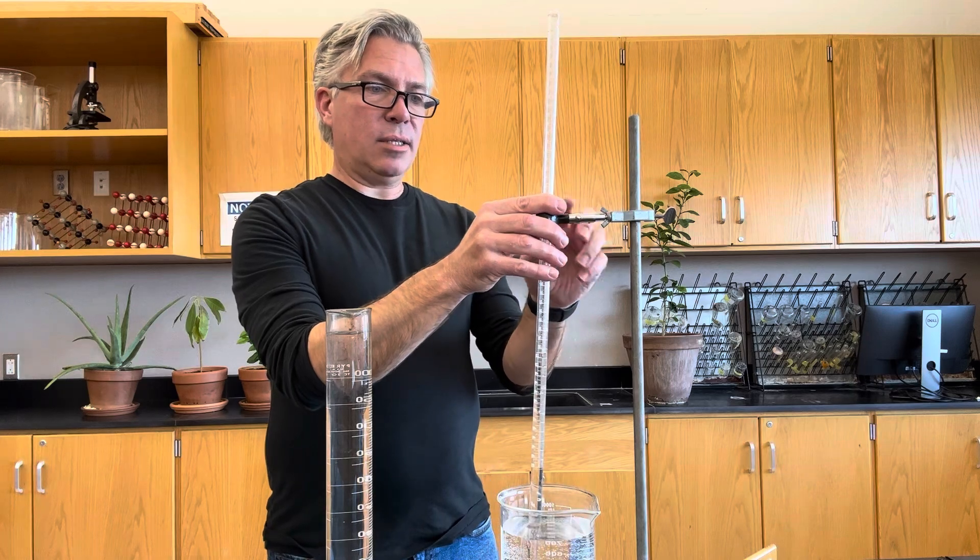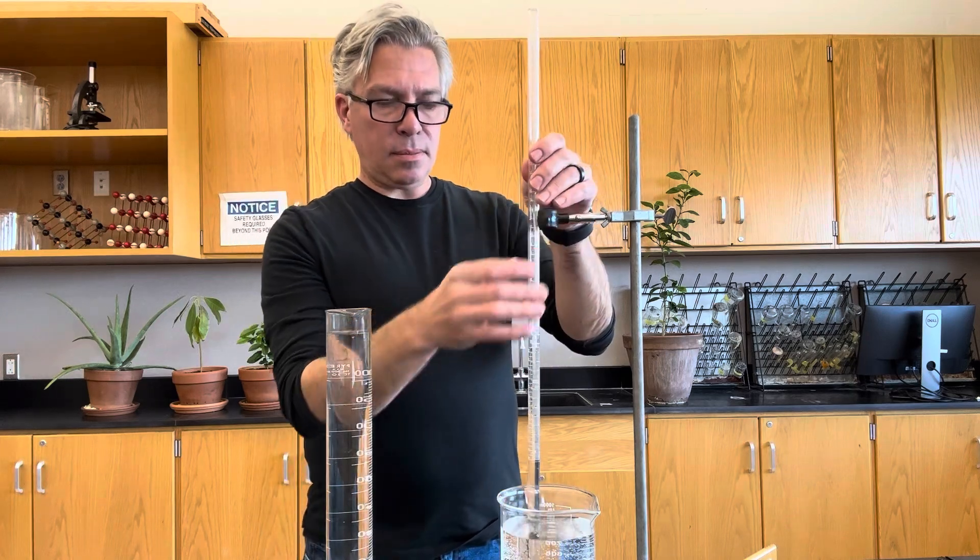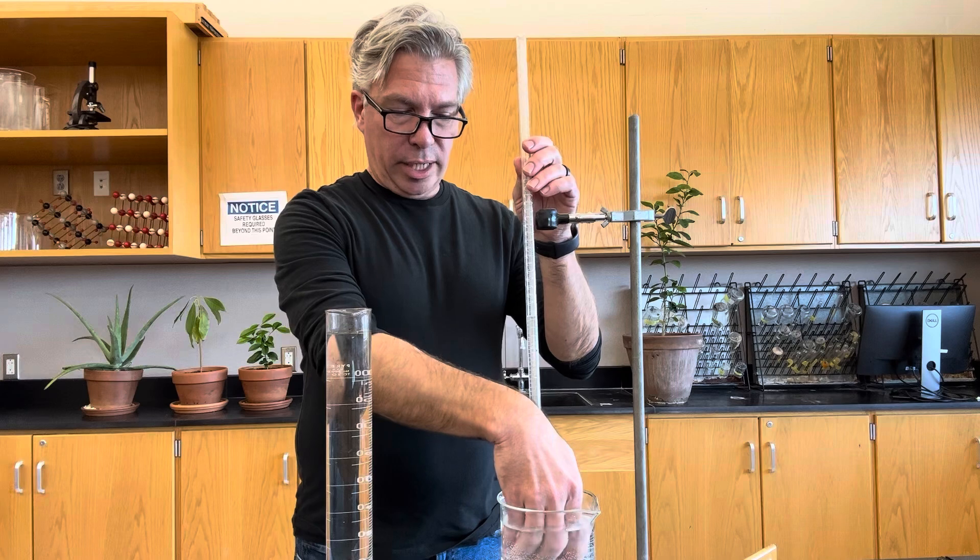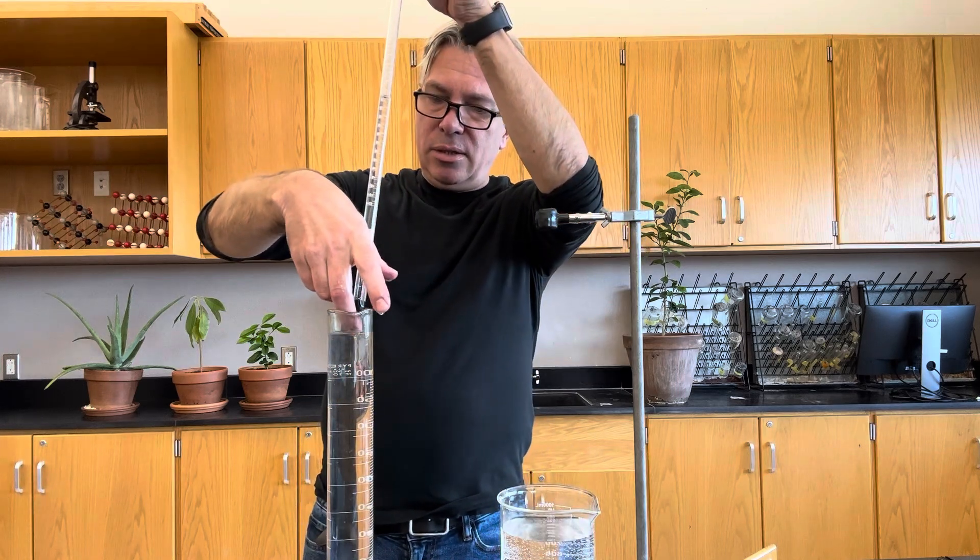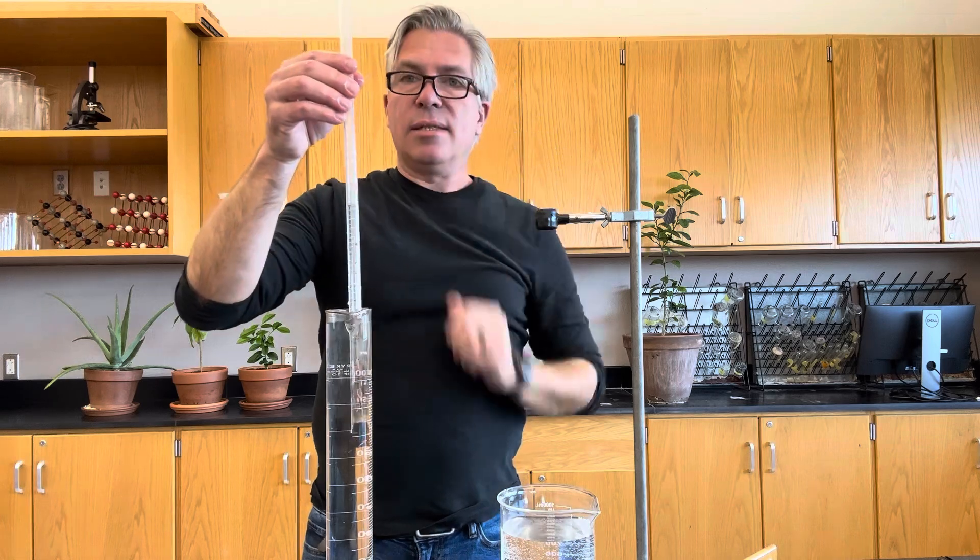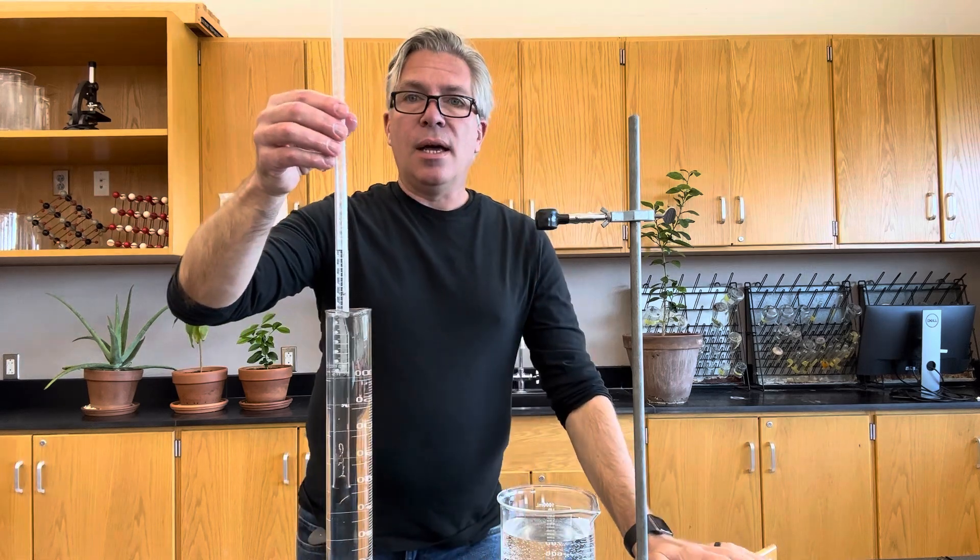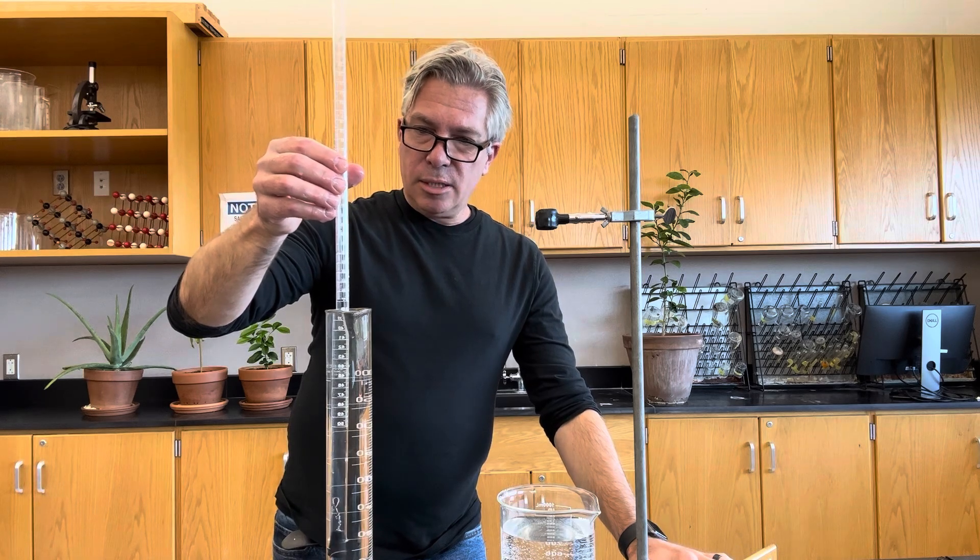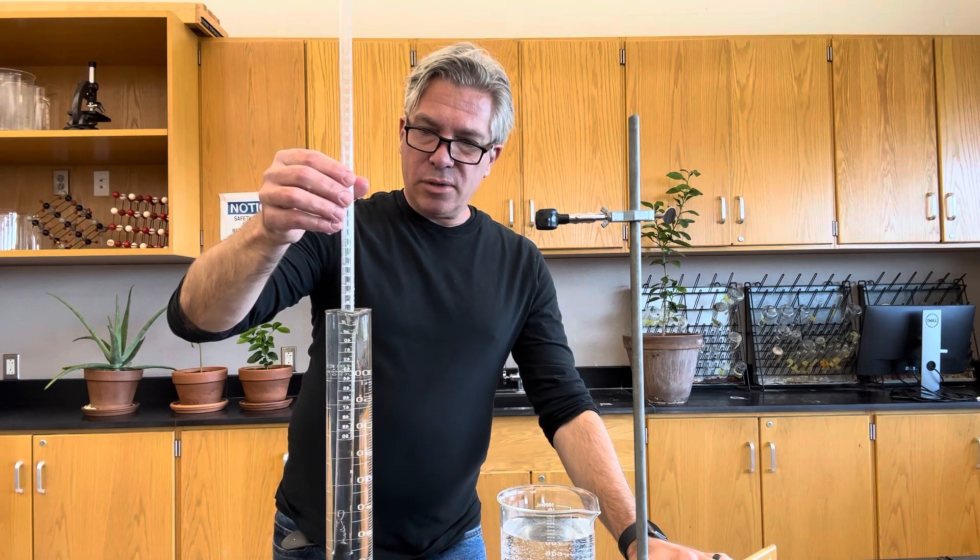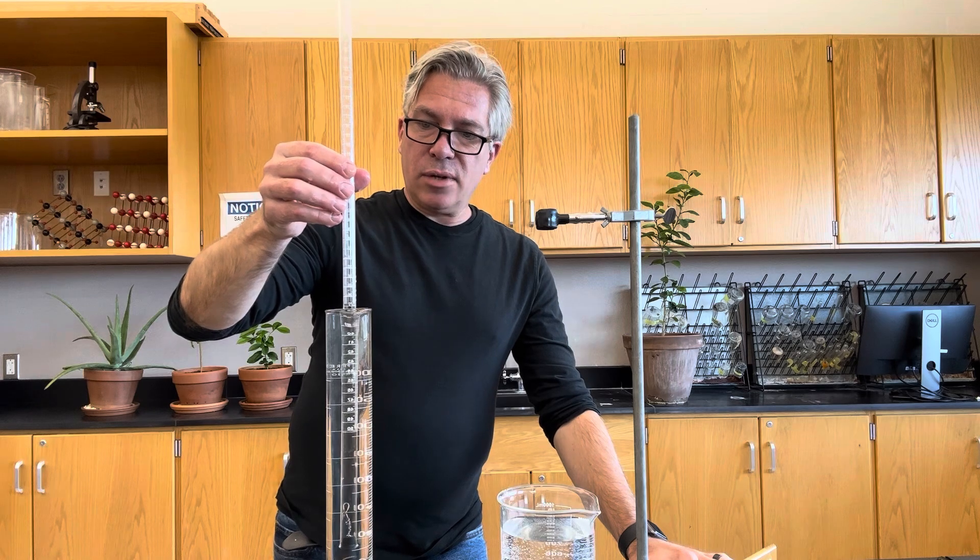So what I'm going to do is I'm going to take this off the ring stand. I'm going to cover up the hole so I don't get any leakage. And I'm going to put it over here into this large graduated cylinder that I've filled most of the way to the top. Okay. And the way to fix this and just adjust it is by leveling the level inside the tube with the level outside the tube.